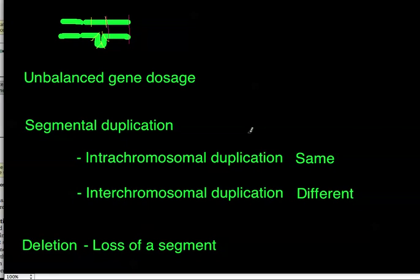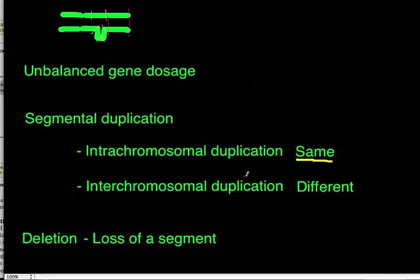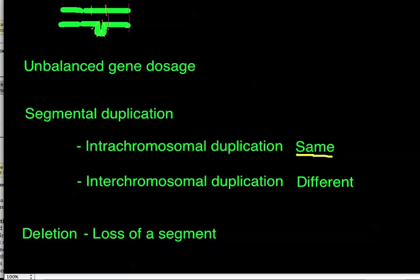For your duplication, you're going to either see that they're on the same chromosome or duplicating to different chromosomes. If you have one chromosome and it duplicates on the same chromosome, that's your intrachromosomal duplication. If it's duplicating on a different one, that's your interchromosomal duplication. Inter is between chromosomes.